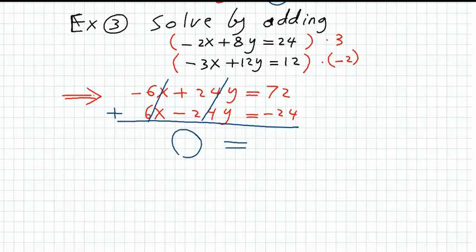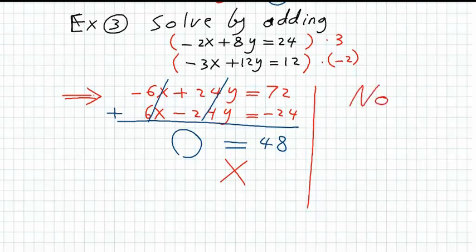We can see that this is a wrong statement — it is a false statement. It is not correct. Because of that, we will say that we have no solution. And this means that our two lines are parallel lines.